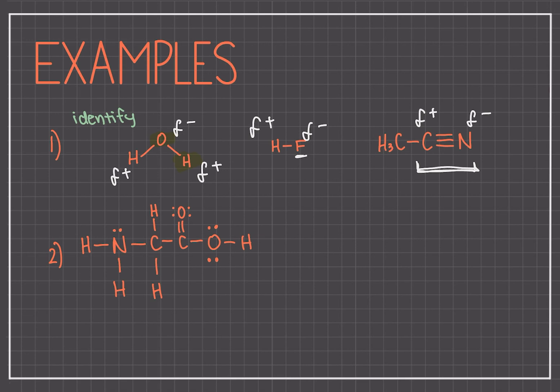Though with carbon and nitrogen being so close together on the periodic table, it's probably close to being a pure covalent bond, but there is that bit of electronegativity difference so it will be polar covalent.